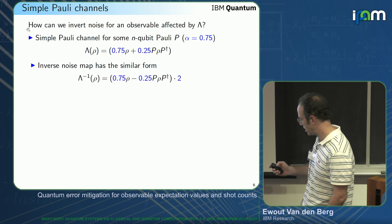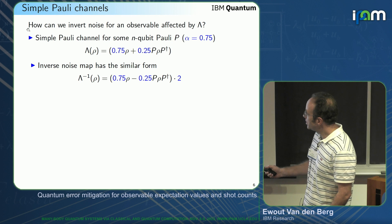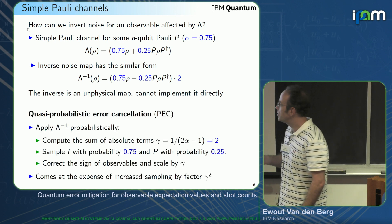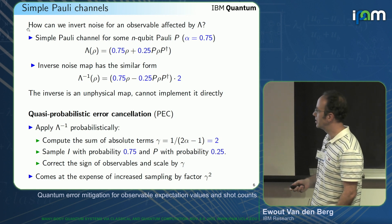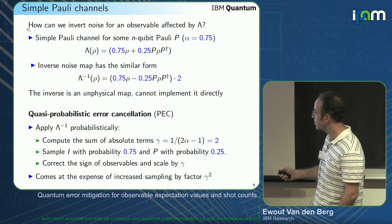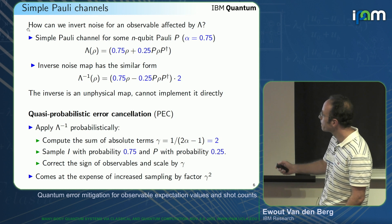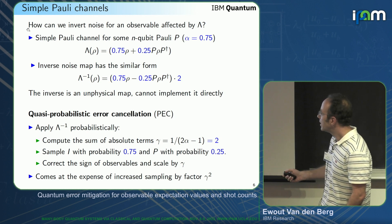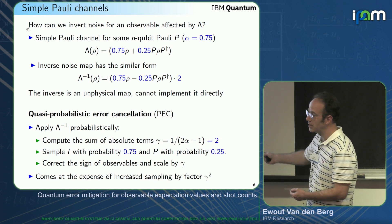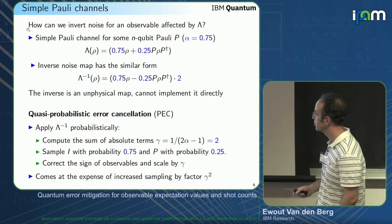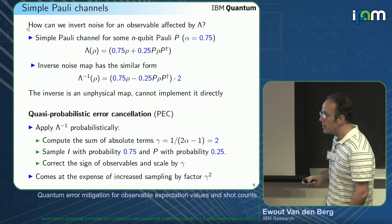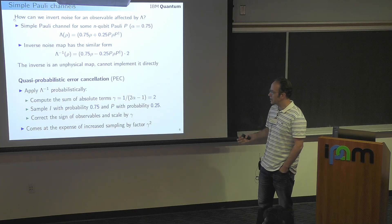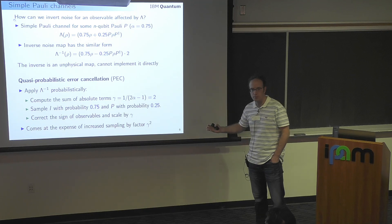Let's plug in some value of α just for clarity. These two terms sum to one. The inverse is an unphysical map — you cannot implement it directly — but you can apply it probabilistically. You compute the absolute sum of the terms, giving you a scaling factor of two here. Ignoring signs, you get a distribution and can sample from it. Because we evaluate observables, if you sample, you can classically apply the negative sign and this factor of two — you just track signs and the scaling factor. This increases variance, and the sampling complexity grows by a factor of γ².